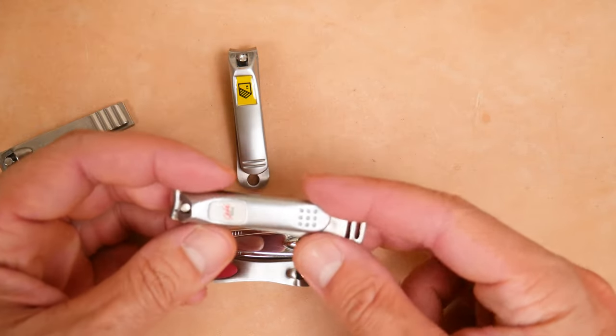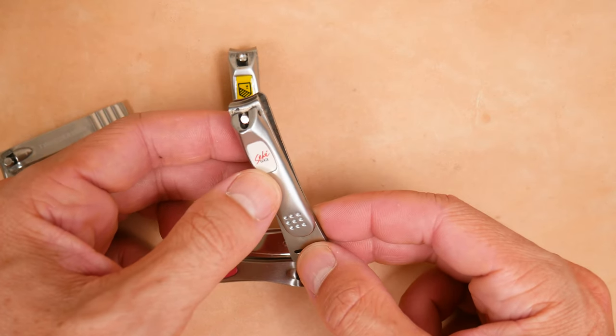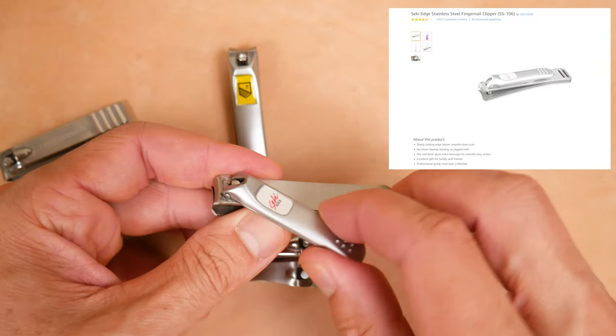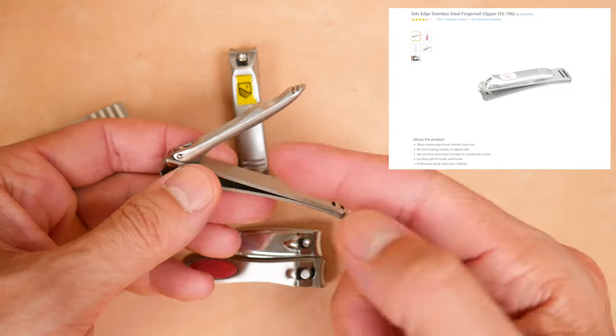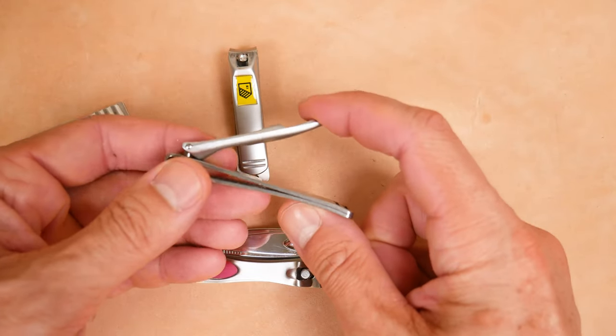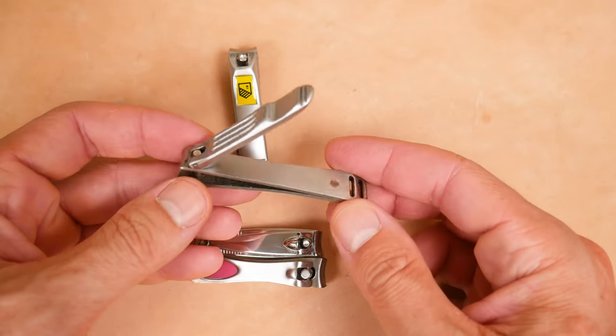Then I found the Seki. That's how I say it. I'm not sure if that's the correct word. S-E-K-I edge fingernail clippers. Now these are razor sharp. They have this nice aluminum. So there's different metals here. This is stainless steel. And then we have an aluminum handle here, which is nice and firm. It doesn't flex. Very clean, very sharp.